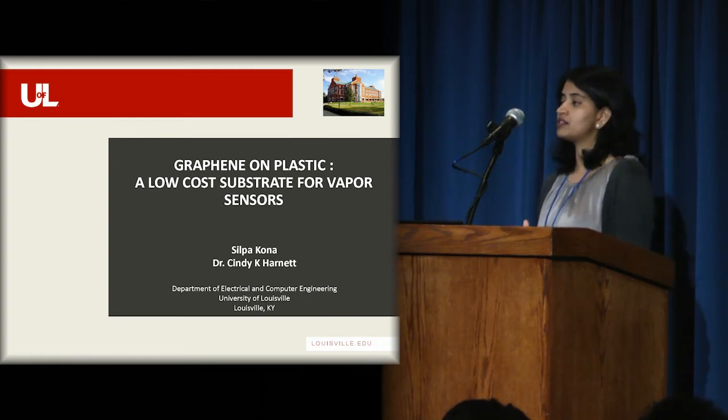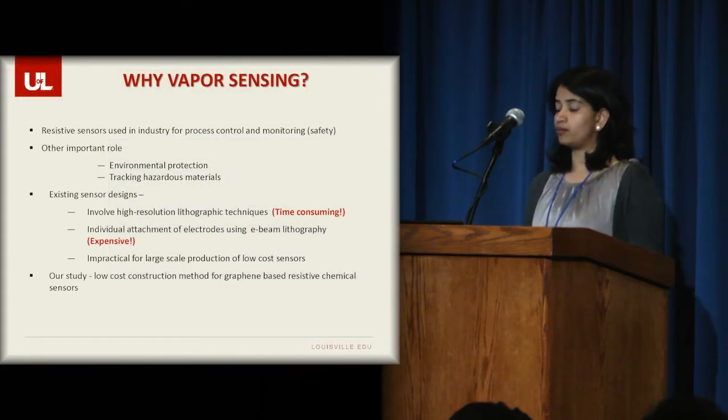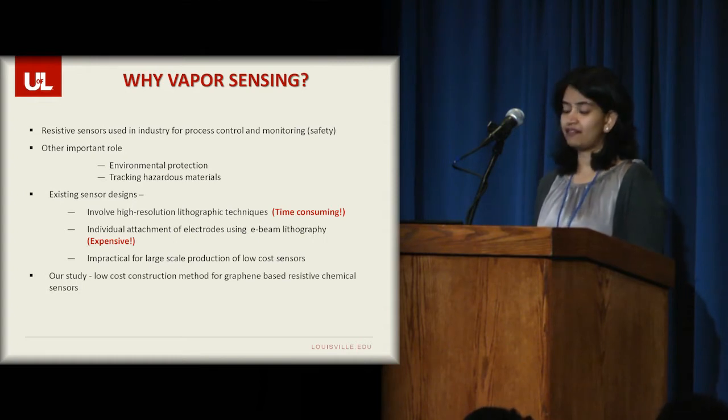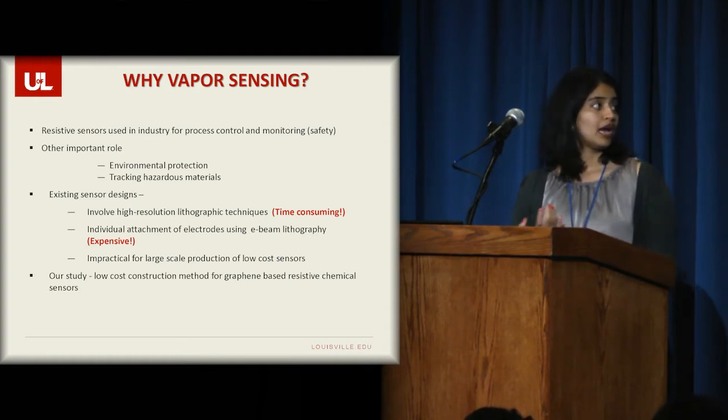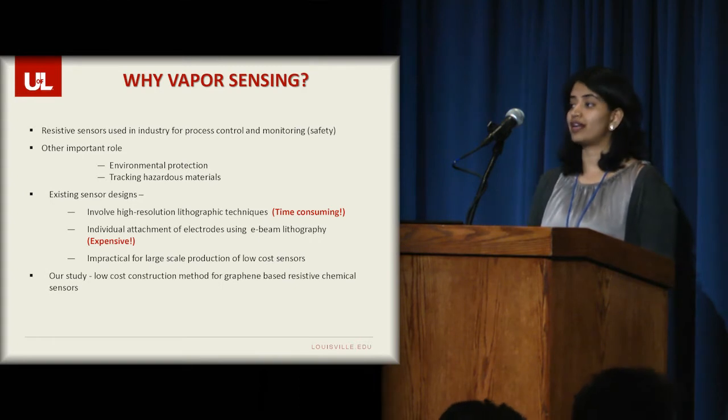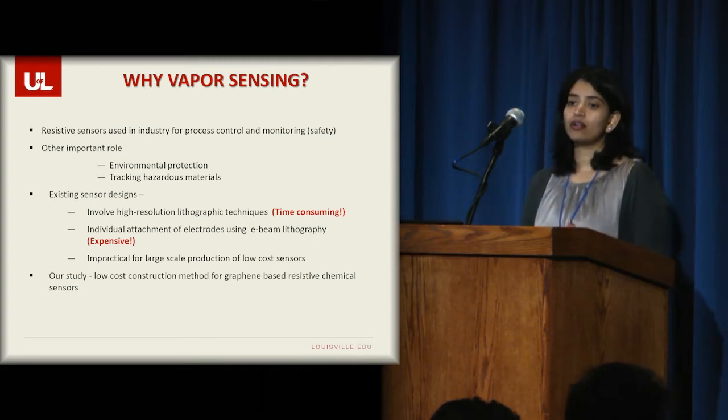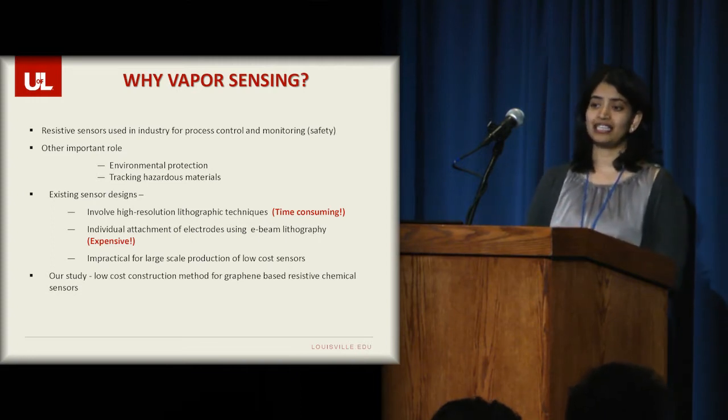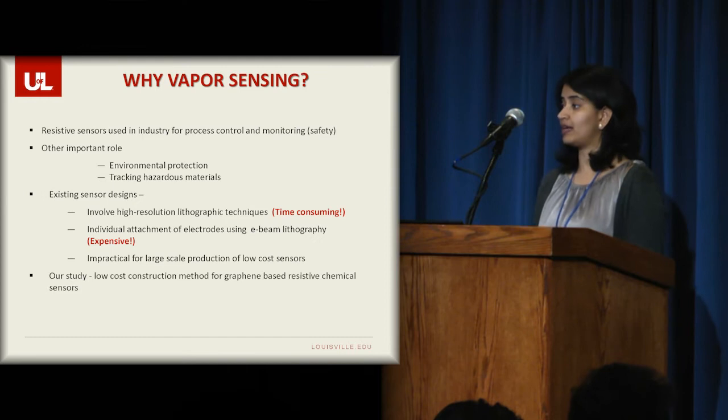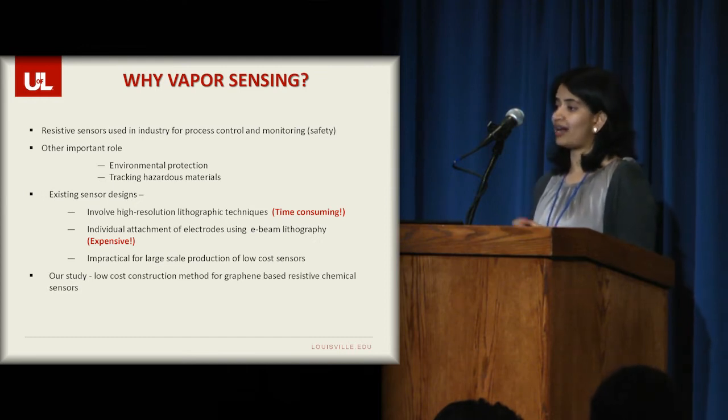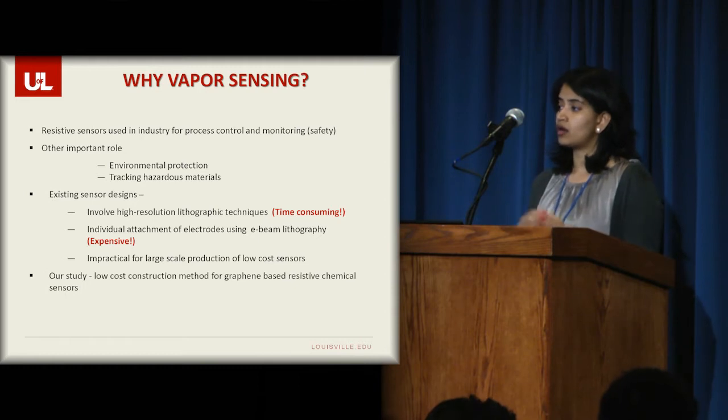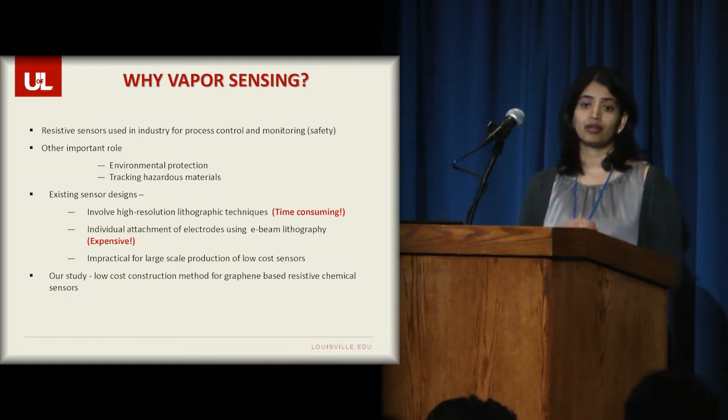Resistive chemical sensors are being used in the industry for a long time for process control and monitoring safety, in addition to environmental protection and tracking hazardous materials. So the current existing sensor designs involve high-resolution lithographic techniques, which are very expensive and consume a lot of time. And this essentially makes it impractical to have low-cost production of these sensors on a very large scale.